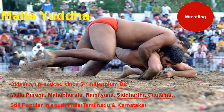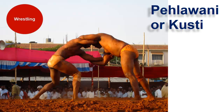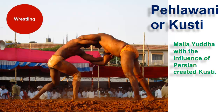Next is Pahlavani or Kushti. Mallayuddha, with Persian influence, converted into Pahlavani or Kushti, popular in North India. Even Babur himself was a Pahlavani wrestler who could lift two men and run very fast. Rajputs also practiced it. So Pahlavani or Kushti is popular in North India and developed from Mallayuddha through Persian influence.